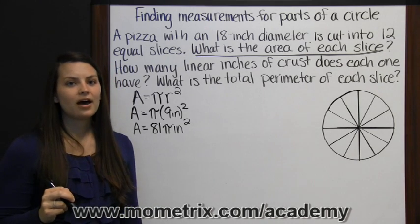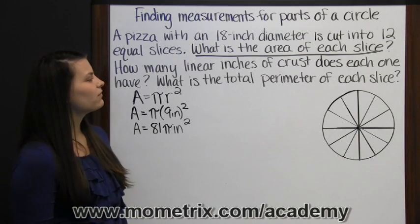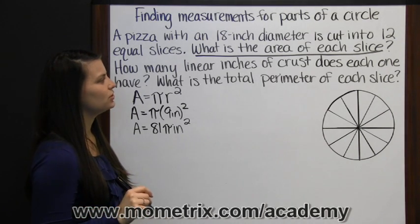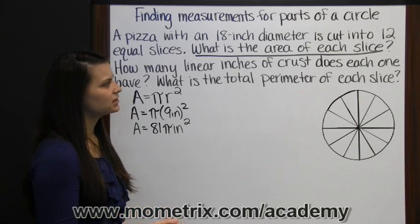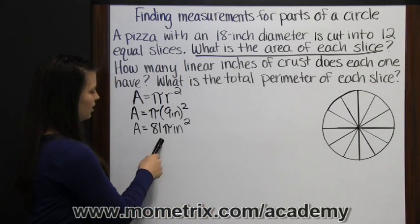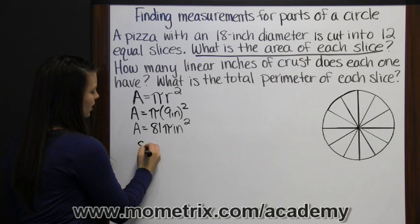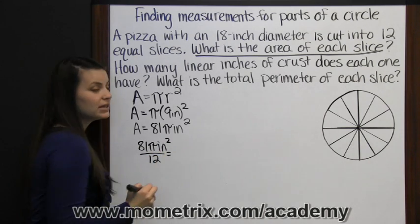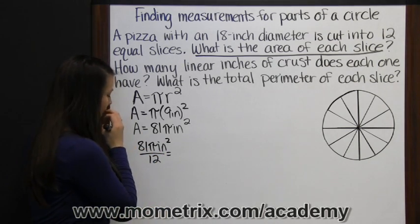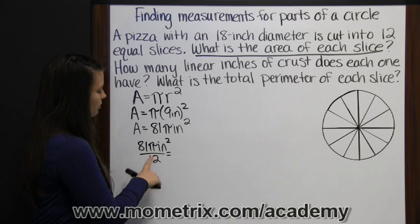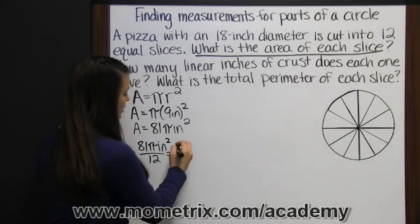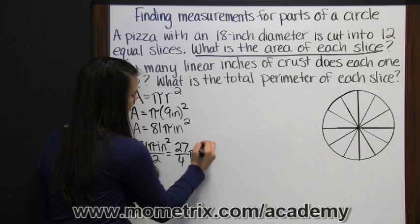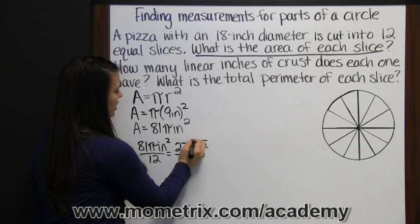Now that's the area of the whole pizza. We want to find the area of just one slice or of each slice. So that tells us we're going to divide. The area of our pizza is cut into 12 equal slices. So we're going to take our area, 81 pi inches squared, and divide it by 12. Then we can simplify that. We can divide our numerator and our denominator both by 3, and we get 27 fourths pi inches squared. So that's the area of just one slice of pizza.